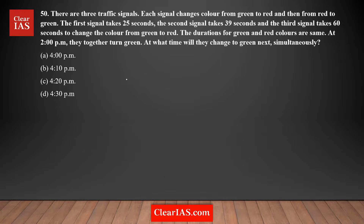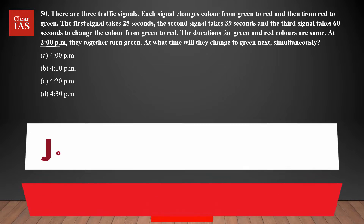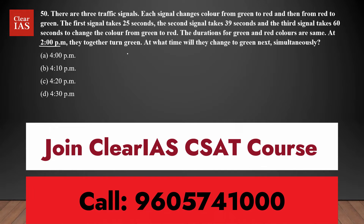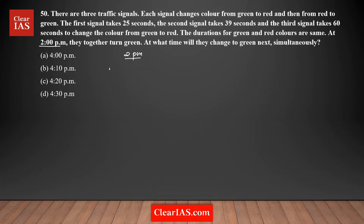This is a good and doable question. You just need to have a clear understanding of the question. It's given that there are three signals — at 2 PM, all of them turn green. Each signal changes color from green to red, and then from red back to green. There are only two colors: green and red. The first signal takes 25 seconds to change from green to red.